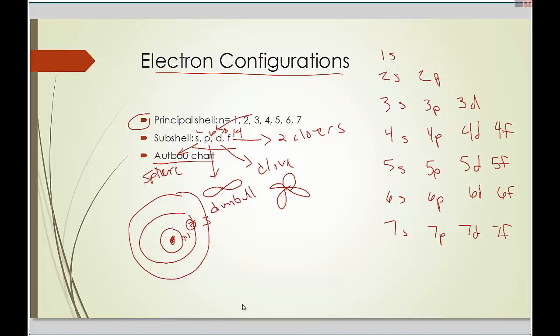Now as said before, the S's have two electrons in it apiece. The P's have six electrons in them. The D's have 10, and the F's have 14.